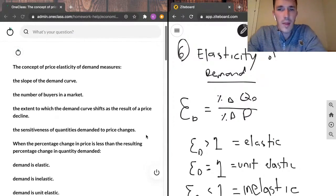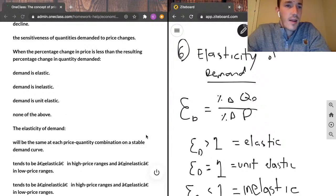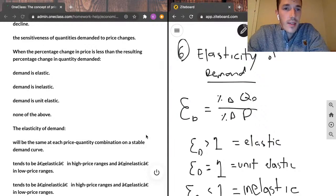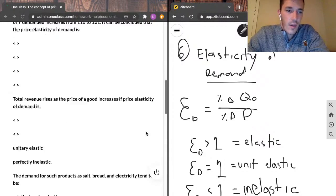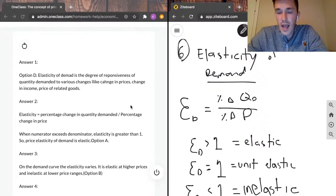I guess I'll do one more from this. When the percentage change in price is less than the resulting percentage change in quantity demanded, demand is elastic, demand is inelastic, demand is unit elastic, or none of the above. And as our junior tutor has written here, when the numerator exceeds the denominator, elasticity is greater than one. So price elasticity of demand is elastic, option A. This is correct.